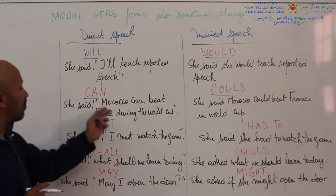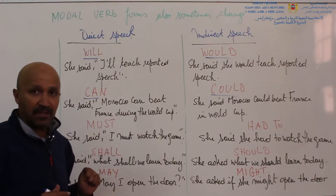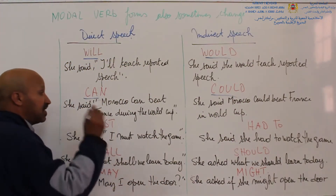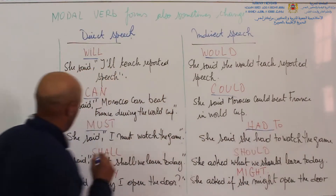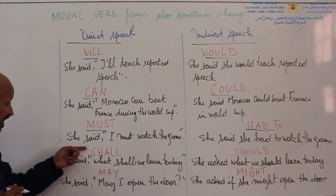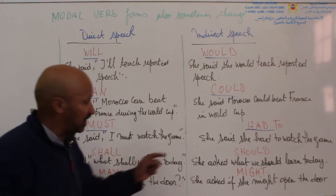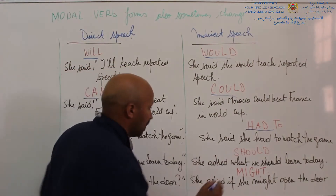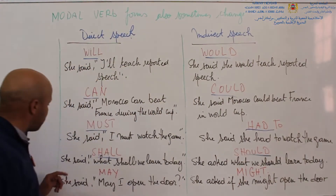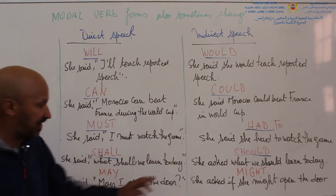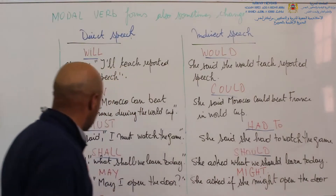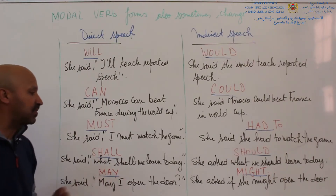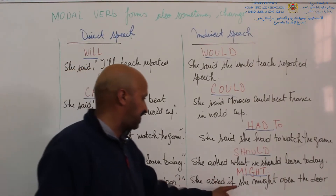'Can' changes to 'could'. For example, she said Morocco can beat France during the World Cup becomes she said Morocco could beat France in the World Cup. 'Must' changes to 'have to' — she said she had to watch the game. 'Shall' changes to 'should' — she asked what we should learn today. 'May' changes to 'might' — she asked if she might open the door.